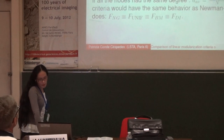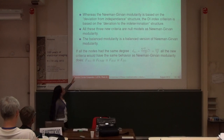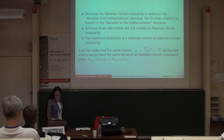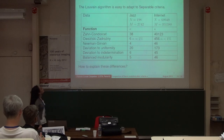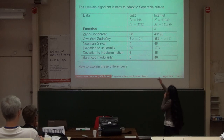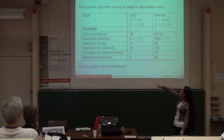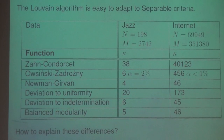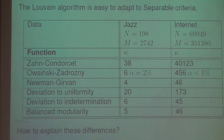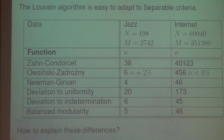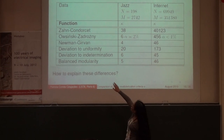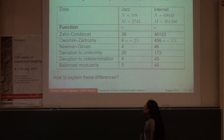We have already established that for a graph where all nodes have the same degree, the Newman-Girvan modularity and the other criteria have the same behaviour. Now let's see some results. I took two real graphs — sub-networks of the internet — where n is the number of nodes and m is the number of edges. Looking at the different criteria and the number of clusters found, you can see important differences. The Condorcet criterion always creates more clusters than the others. The deviation to uniformity also creates more clusters, whereas the others — Newman-Girvan, deviation to undetermination, and balanced modularity — are nearly the same.